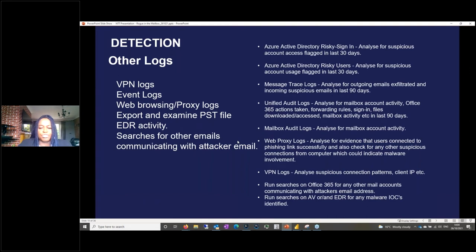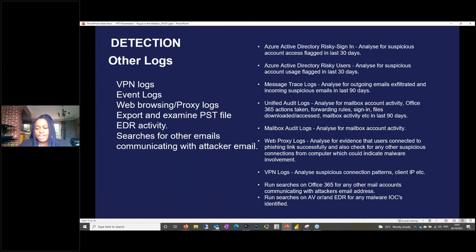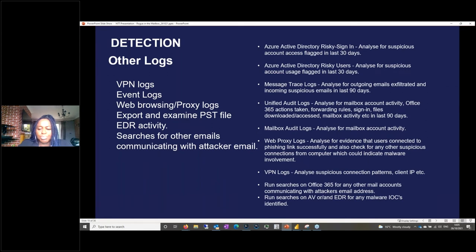I'm a believer in whitelisting and blacklisting — if it's not required for business, don't allow it. There are other logs to look at as well. In the Azure environment, you have risky sign-in and risky user options to check for patterns. That's for proactively looking, but during active investigation you may not have all the time to be checking dashboards. We also go for EDR activity if we suspect malware is involved, because the attacker may decide to drop something to get more access.